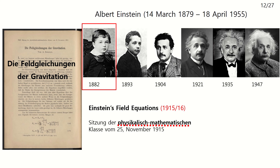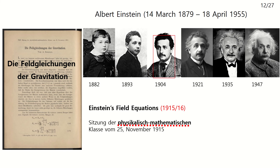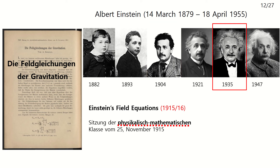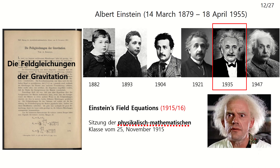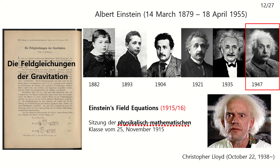This photo was taken when he was in middle and high school. In another photo, Einstein was in his mid-twenties when he worked for the Swiss patent office, just one year before publishing Special Relativity in 1905. In 1935, he was at Princeton University. Do you know who this is? An actor named Christopher Lloyd — the doctor who invented the time machine in the film Back to the Future. It is similar to this photo, isn't it?